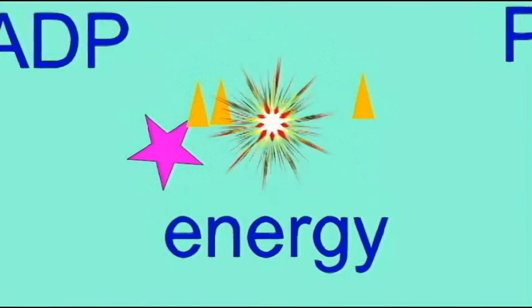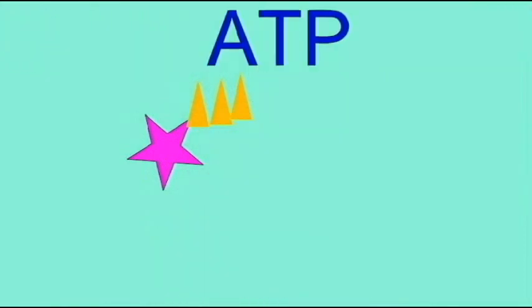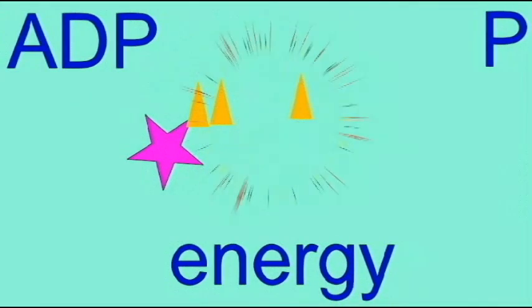When you move, muscle cells use ATP. When you think, nerve cells are using ATP. When you make new chromosomes in a dividing cell or you move cilia or anything. All of the energy transactions in your body involve me, ATP—a nucleotide with a few extra phosphate groups.